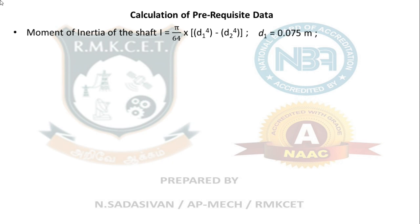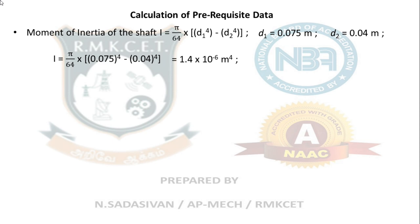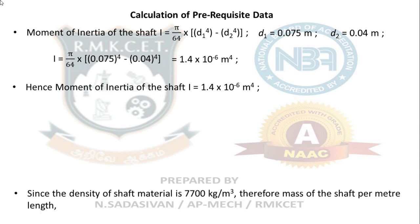Substitute the numbers: π/64 × (0.075⁴ − 0.04⁴). Put the larger number first so the result is not negative — moment of inertia cannot be negative. The answer comes to approximately 1.4 × 10⁻⁶ m⁴. The moment of inertia of the shaft is 1.4 × 10⁻⁶ m⁴.